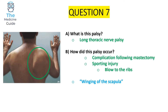This is an example of a long thoracic nerve palsy. The patient's right long thoracic nerve has been damaged, presenting with winging of the right scapula. This is commonly a complication following mastectomy or a sporting injury involving a blow to the ribs. Winging of the scapula can be accentuated by asking the patient to push forward against a wall, which makes the vertebral border and inferior angle of the scapula far more prominent.